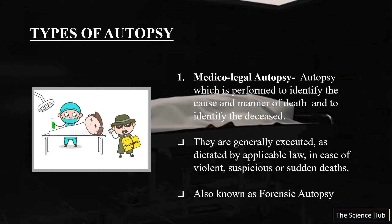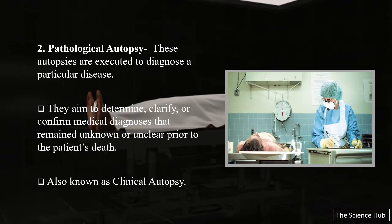Let's talk about the types of autopsies. First, the medico-legal autopsy. This autopsy is performed to identify the cause and manner of death and to identify the deceased. They are generally executed as dictated by applicable law in cases of violent, suspicious, or sudden deaths. This medico-legal autopsy is also known as a forensic autopsy.